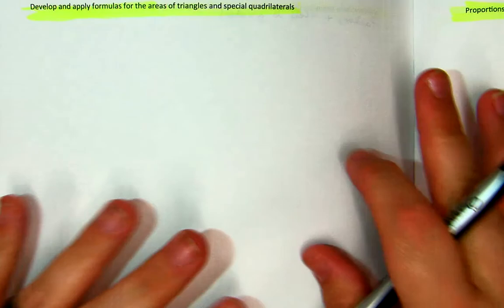Everybody, we are going to talk about areas of triangles and special quadrilaterals: the trapezoid, square, rectangle, all of those fun things.